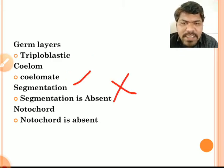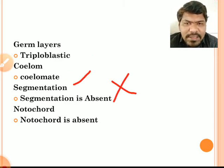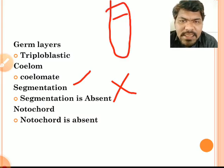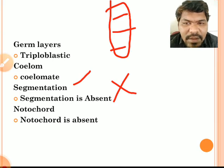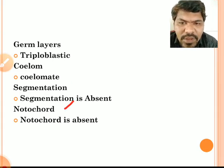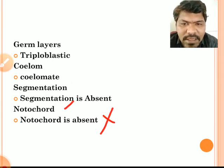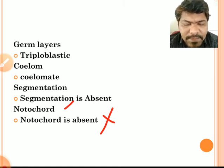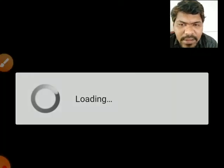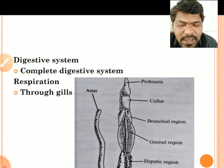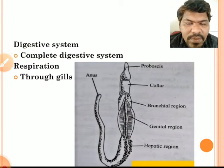Segmentation is absent in hemichordates. Segmentation means the body is externally and internally divided into different segments; that type of segmentation is absent in hemichordates. Notochord is also absent. Notochord is a rod-like structure which gives support to the body. Since notochord is absent, hemichordates are one type of non-chordates.